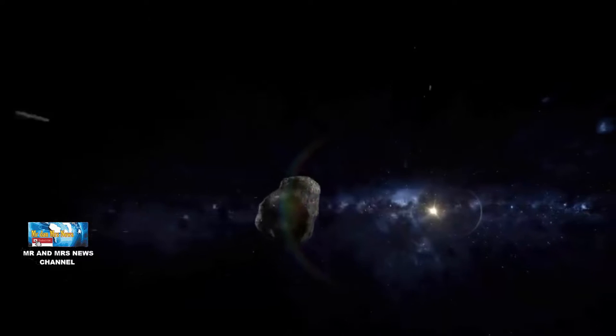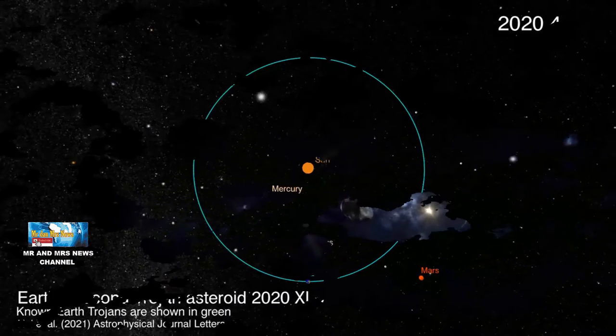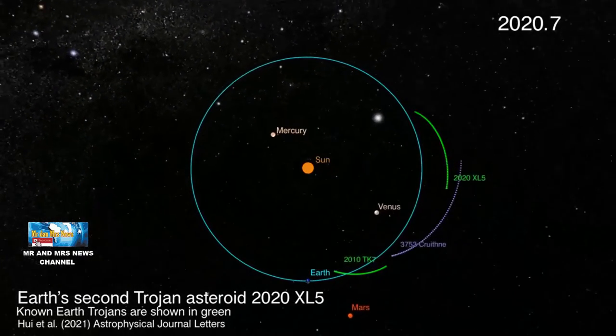Seperti dikutip dari New York Post, ilmuwan menamakan asteroid itu sebagai 2020 XL5 dan ia terpantau mengikuti orbit bumi.